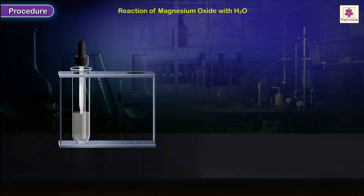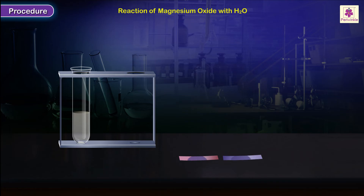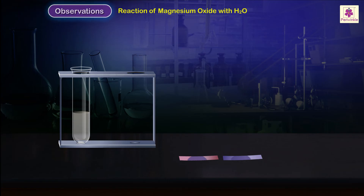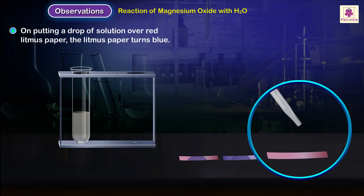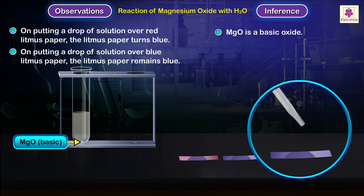Procedure: use a dropper to place one or two drops of the solution onto a red litmus paper and onto a blue litmus paper. Observation: on putting a drop of solution over red litmus paper, the litmus paper turns blue; on putting a drop over blue litmus paper, the litmus paper remains blue. Inference: magnesium oxide is a basic oxide.